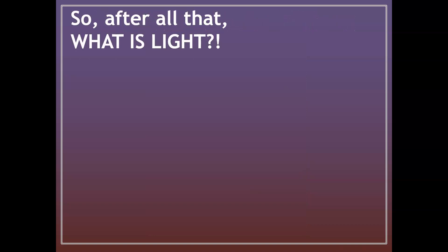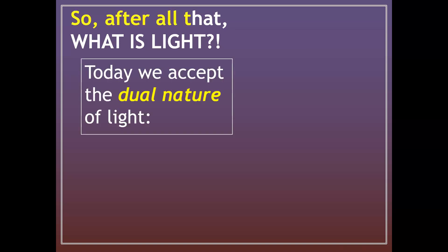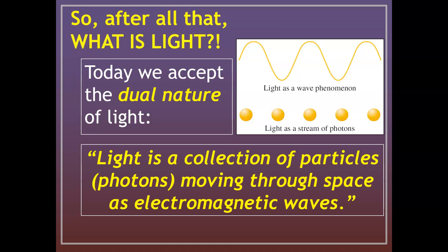After all we've talked about in terms of light as a wave, a ray, and a particle — what is light? We actually accept multiple definitions: the dual nature of light. Light can act as a wave, and light can also act as a stream of particles or photons. Light is a collection of particles — photons — moving through space as electromagnetic waves.